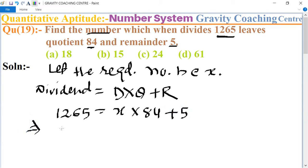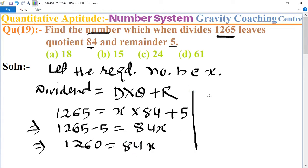This implies that 1265 minus 5 equals 84x, so 1260 equals 84x. Therefore, x equals 1260 upon 84.